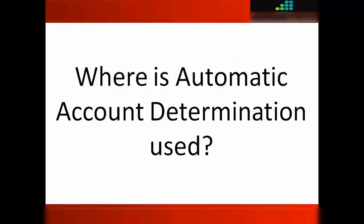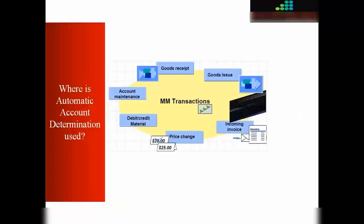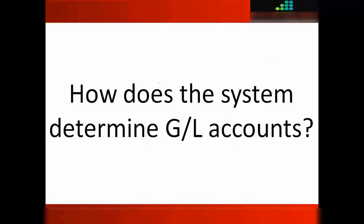First, let's see where automatic account determination is used and in what processes. It is used in all these different activities: whenever you do a goods receipt, a goods issue, when posting invoices, when changing the price in a document, when creating a debit or credit memo, or during account maintenance. In all these activities the system posts to the relevant GL account. These are the most commonly used transactions where GL account determination takes place, and that's where the integration happens between SAP MM and SAP FICO.